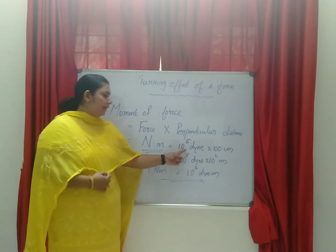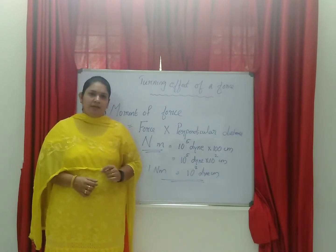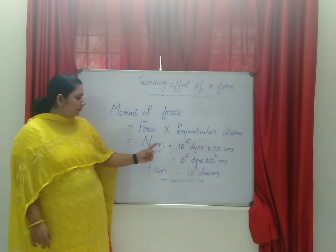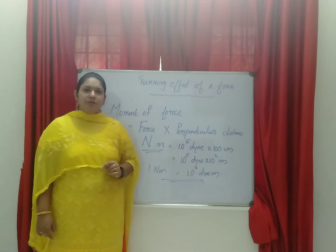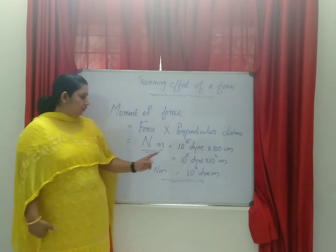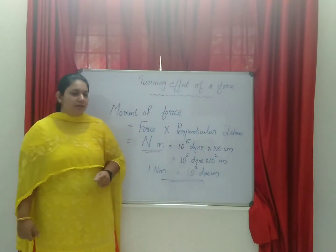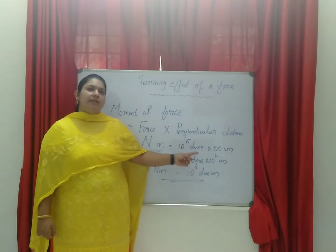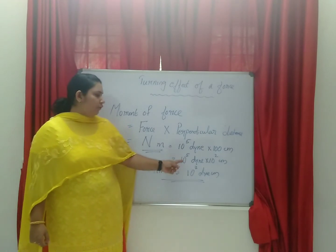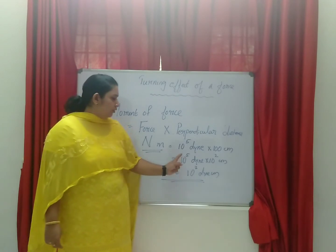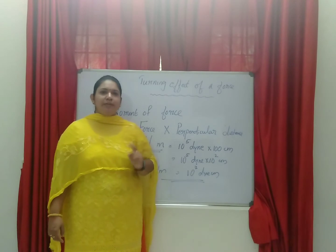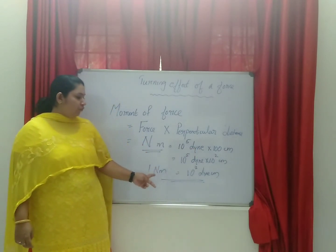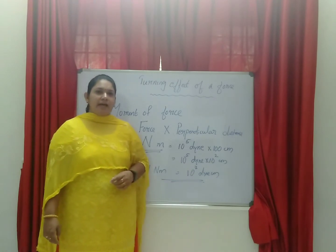The CGS unit of force is dyne, and 1 Newton is 10 raised to 5 dyne. When converting to CGS unit, the unit of length is centimeter, and 1 meter is 100 centimeter. So 1 Newton meter = 10 raised to 5 dyne × 100 centimeter. We can write 100 as 10 squared, so 10 raised to 5 × 10 squared = 10 raised to 7 dyne centimeter. So 1 Newton meter equals 10 raised to 7 dyne centimeter, which is the relation between the SI unit and CGS unit of turning effect of force.